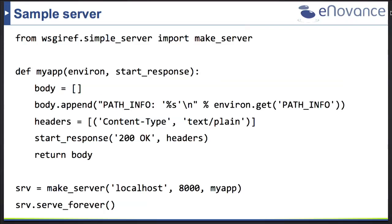Let's have a look at a simple sample server. Everything you need is included in Python itself — you don't need to install any additional packages. What we're doing is simply starting a server on localhost port 8000. The server calls the application defined above, which takes the environment and start_response as arguments and returns a body with an element from our dictionary — in this case, the path info.